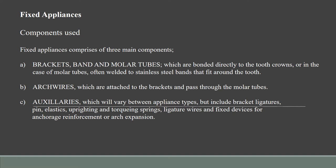So what are the components used? There are several components which come into play when fixed appliances are placed on a patient's teeth. Basically these are brackets, bands and molar tubes, arch wires, and also certain auxiliaries such as elastics, bracket leg gauges, uprighting and torquing springs, and fixed devices such as temporary anchorage devices or additional appliances for arch expansion. The main components are the brackets, bands and molar tubes, arch wires, and the ligatures which help secure the arch wires to the brackets.